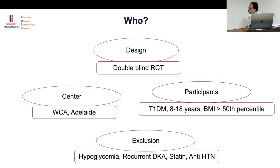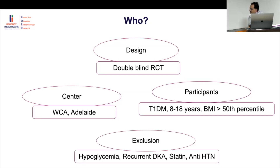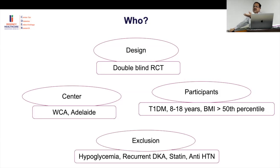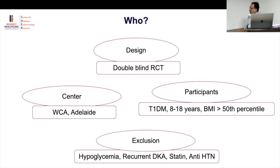Exclusion criteria included recurrent hypoglycemia, DKA, statin use, and antihypertensive use. Why? Someone on a statin already has cardiovascular disease; someone on antihypertensives has established hypertension. Recurrent hypoglycemia and DKA are markers of poor control that may confound outcomes. Extremes of disease severity were excluded.